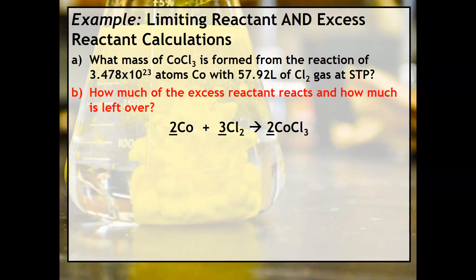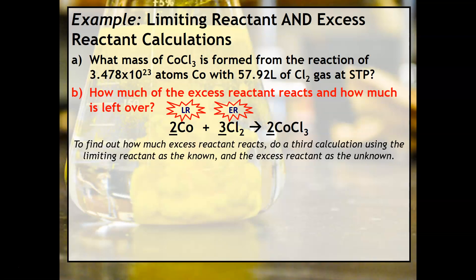We're now working on part B — this is the new part. It wants to know how much of the excess reactant reacts and how much is left over. We identified cobalt as the limiting and chlorine as the excess reactant. This is where you need to do a third dimensional analysis calculation, where the limiting reactant is always the known. So 3.478 × 10²³ atoms of cobalt is the known, and the unknown is liters of Cl₂. The purpose of this calculation is to find what amount of the excess reactant is actually reacting.